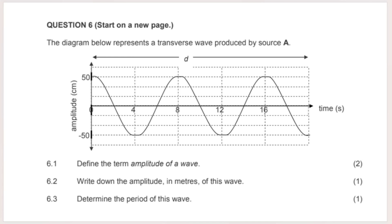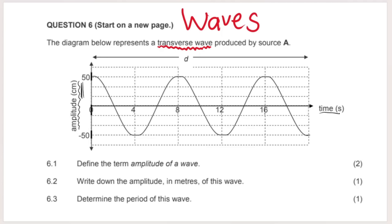The first question I'm starting with is Question 6, which is the waves section. We have a transverse wave — remember transverse and longitudinal waves are both mechanical waves, which means they need a medium to travel through, like air or water. When you see a wave graph in your exam, always analyze your axes. The y-axis says amplitude in centimetres, and the x-axis says time in seconds.